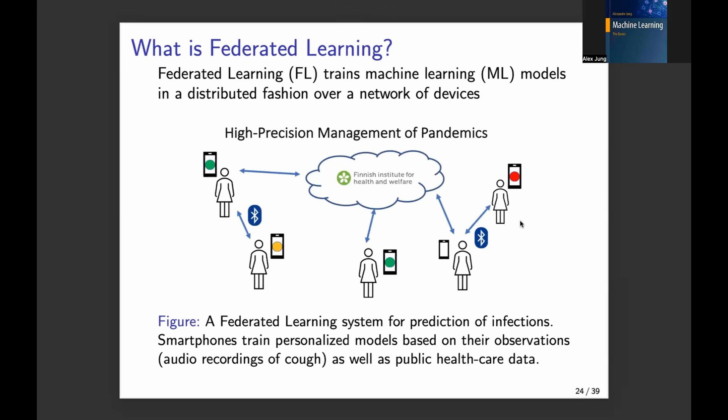Here I have shown one example application of federated learning, which could be the high precision management of pandemics. Maybe you remember a while ago we all suffered from COVID restrictions. One challenge was to find out the best way to isolate people or reduce mobility. One way could be to use a smartphone app which runs a federated learning algorithm and gives you the optimal prediction for whether it is safe to go out.